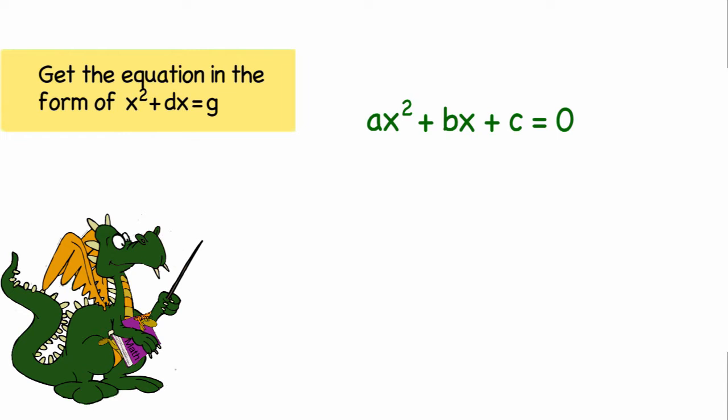The first step is to get the constant in front of the x squared to equal 1. We will do this by dividing all the terms in the equation by a, and that will leave us x squared plus bx over a plus c over a equals 0. We also need to get c over a on the other side of the equation, and we'll do that by adding negative c over a to both sides of the equation.